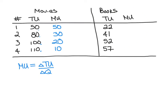Looking at books, we do the same exercise. The first book Marissa buys gives her a total utility of 22, so her marginal utility is 22 for the first book. When she moves to a second book, her total utility increases to 41 — from 22 to 41, that's an increase of 19. When she goes to a third book, her total utility increases to 52, so from 41 to 52 that's an increase of 11 units. Finally, going from a third book to a fourth, her total utility increases to 57, giving a marginal utility of 5 for the fourth book. Again, we see diminishing marginal utility for books as well.